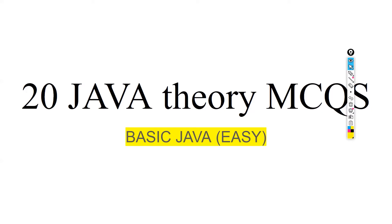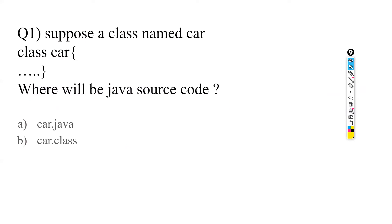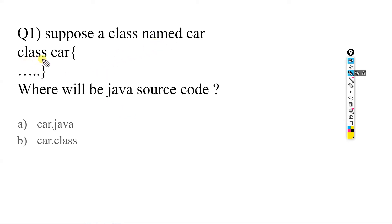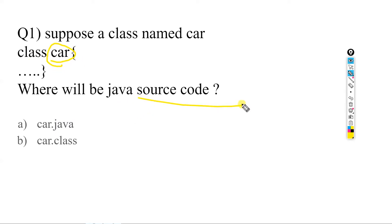This is our first question: suppose a class is named 'Car' — where will the Java source code be present? Will it be in car.java or car.class? The answer is: if we have a class named Car, the Java source code will be present in car.java.